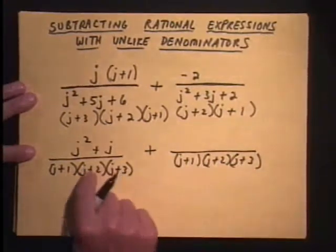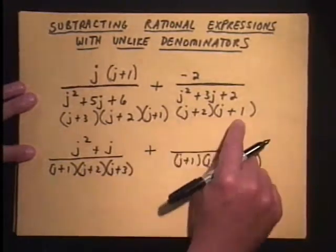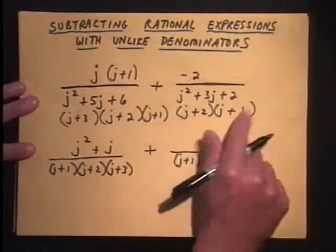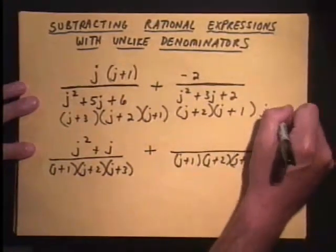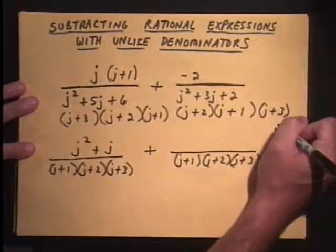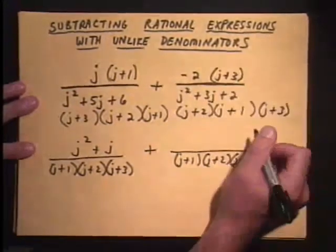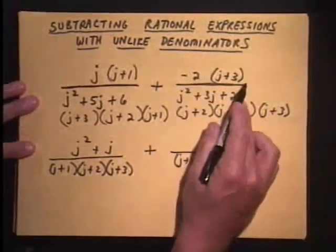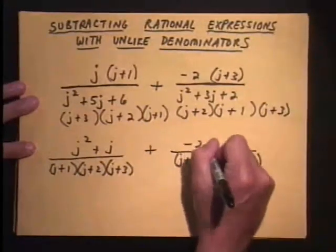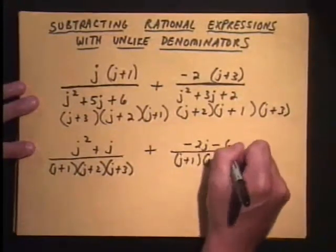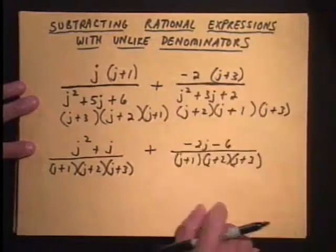Second fraction. Here's the common denominator we established. This one, the second fraction, is missing the j plus 3. And again, whatever you do to the bottom, you've got to do to the top. So we're going to distribute that negative 2 through and get negative 2j minus 6. Watch those signs there.